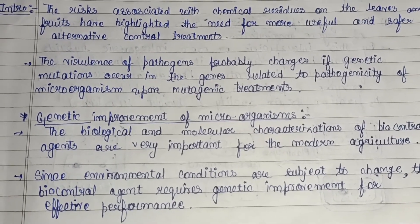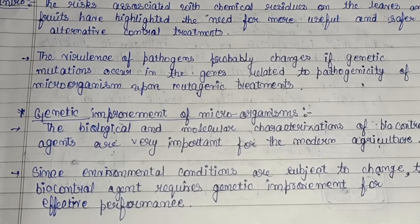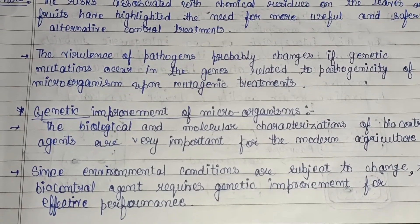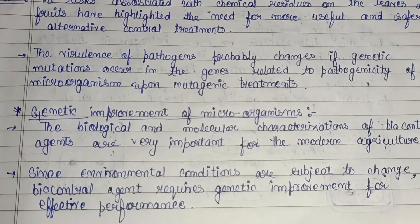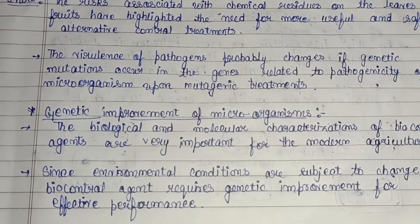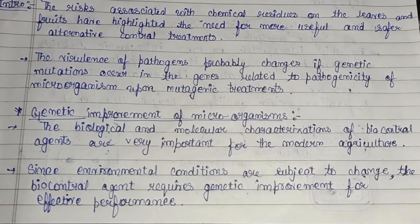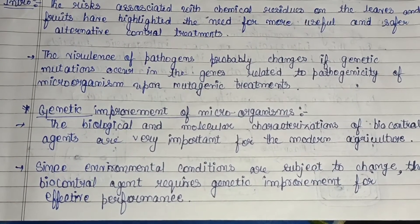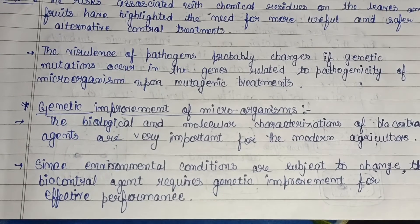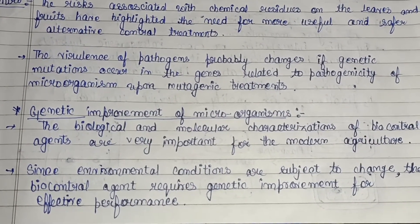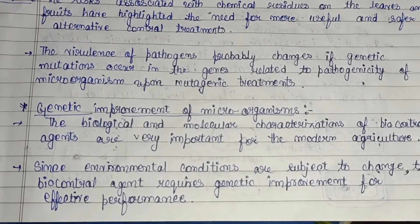Naturally, microorganisms possess the ability to act as biocontrol agents, but they are also modified by the process of genetic improvement. Genetic engineering is utilized for better enhancement of these microorganisms so they can act as more effective biocontrol agents for plants. Biological and molecular characterization of biocontrol agents is very important for modern agriculture, and since environmental conditions are subject to change due to climate change, biocontrol agents require genetic improvement for effective performance.